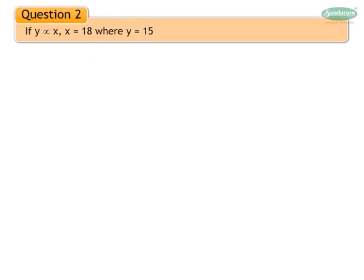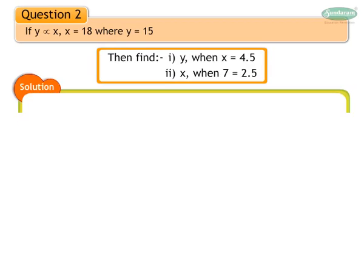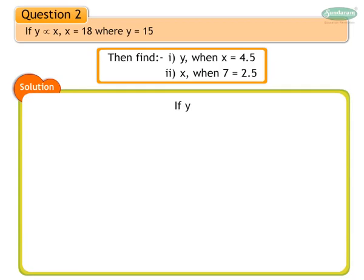Question 2: If y is in direct variation with x and x is equal to 18 when y is equal to 15, then find: (1) the value of y when x is equal to 4.5, and (2) the value of x when y is equal to 2.5. Solution: We express symbolically that y varies as x, and write the equation as y is equal to kx, where k is constant.